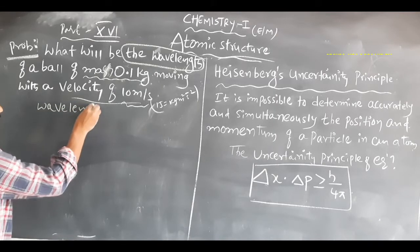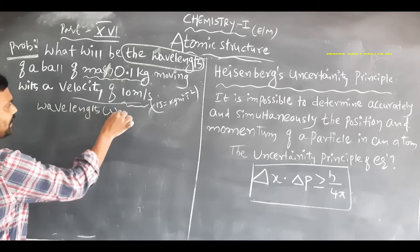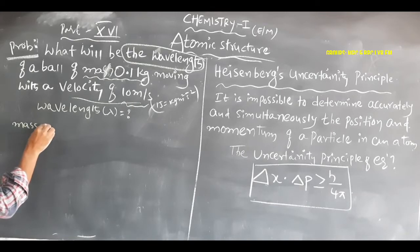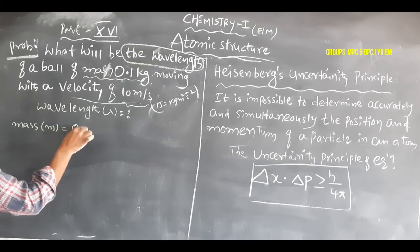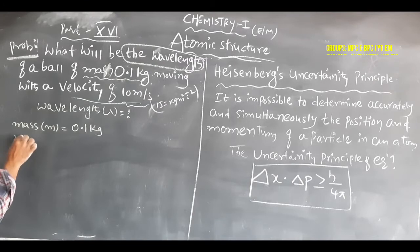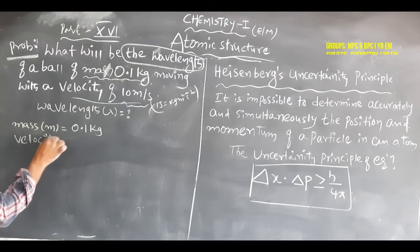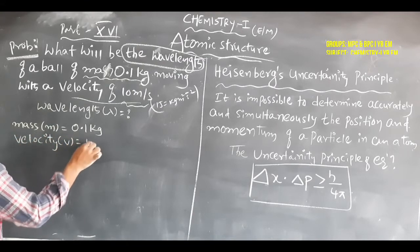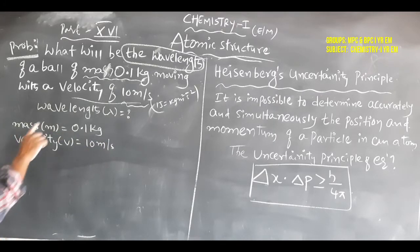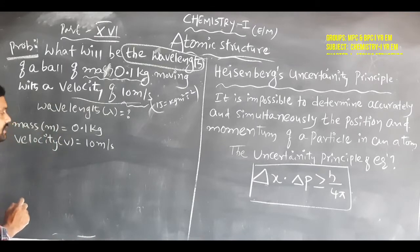The wavelength is lambda. The mass of the ball is given in the problem as m = 0.1 kg, and the velocity is also given as v = 10 meters per second. So lambda is what we need to find, with mass and velocity both given.